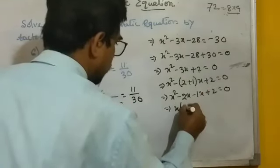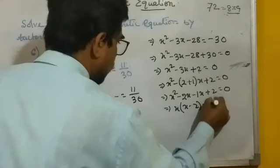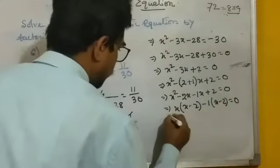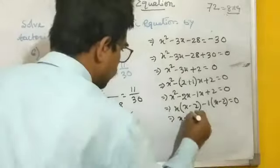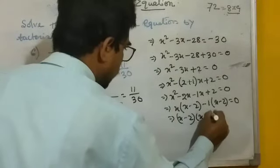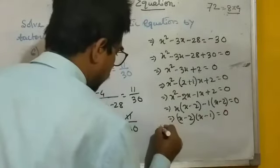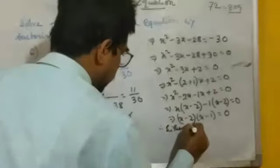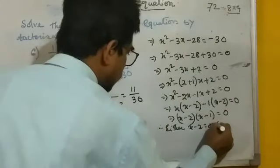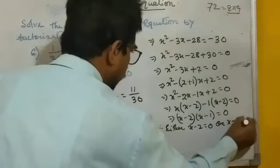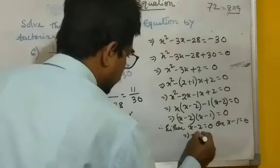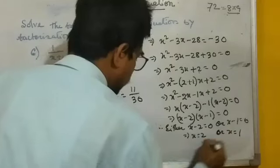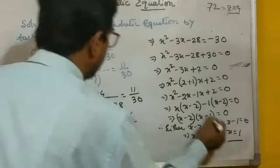Taking x as common gives x times (x minus 2), and taking minus 1 as common gives minus 1 times (x minus 2) equal to 0. So it factors as (x minus 2)(x minus 1) equal to 0. Therefore either x equal to 2 or x equal to 1.